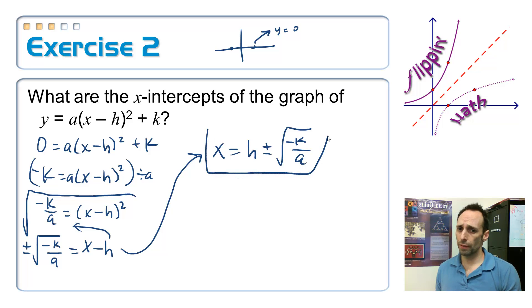I'm going to switch the sides. So x equals h plus or minus the square root of negative k over a. Again, this is not a formula you'd have to memorize, just demonstrating some algebra skills. But this is the process you would go through when it has numbers. You would plug zero in for y, get your k over, divide by a, take square root of both sides, and there are your two x-intercepts.